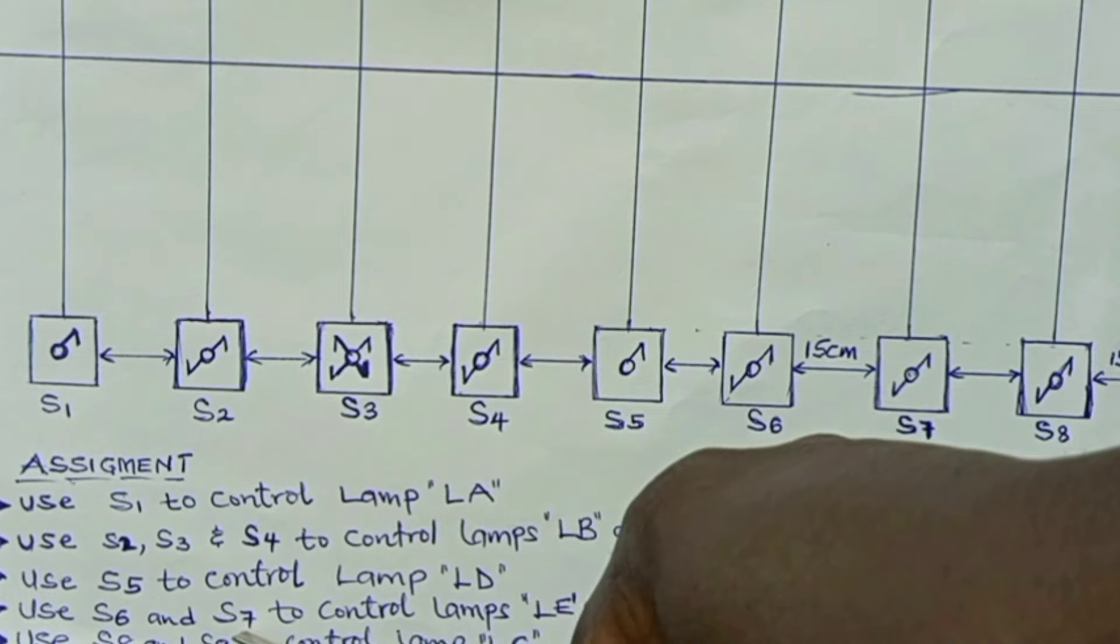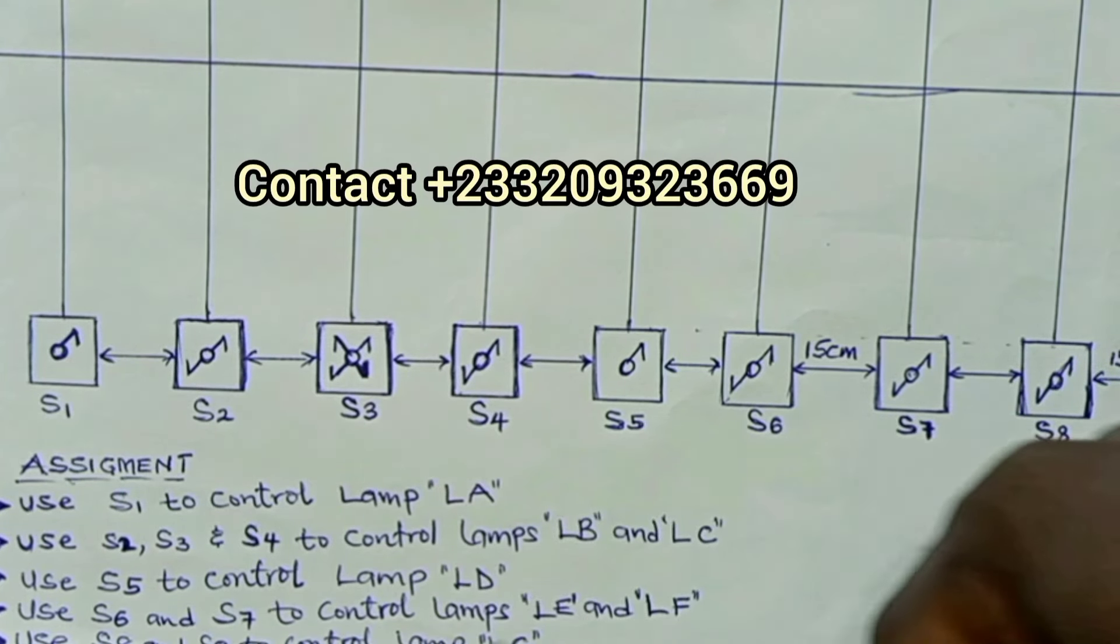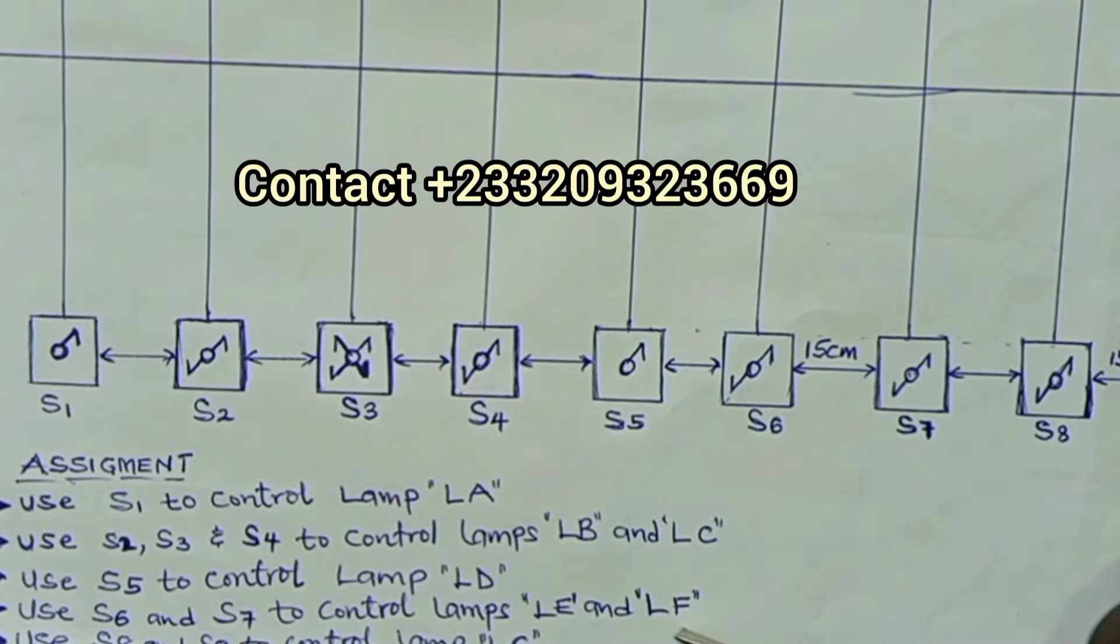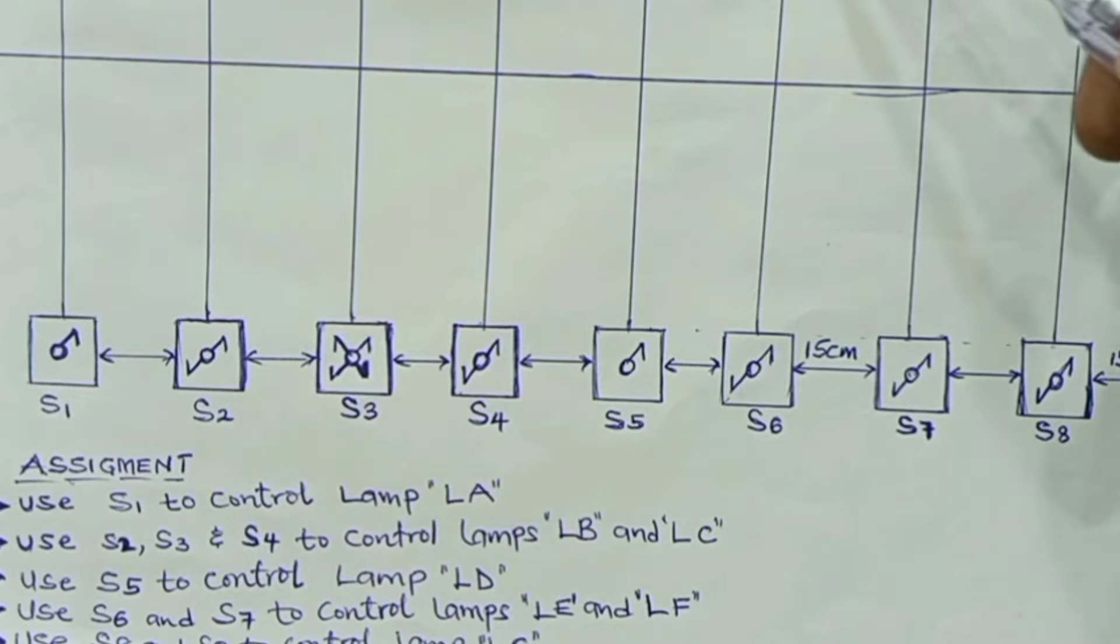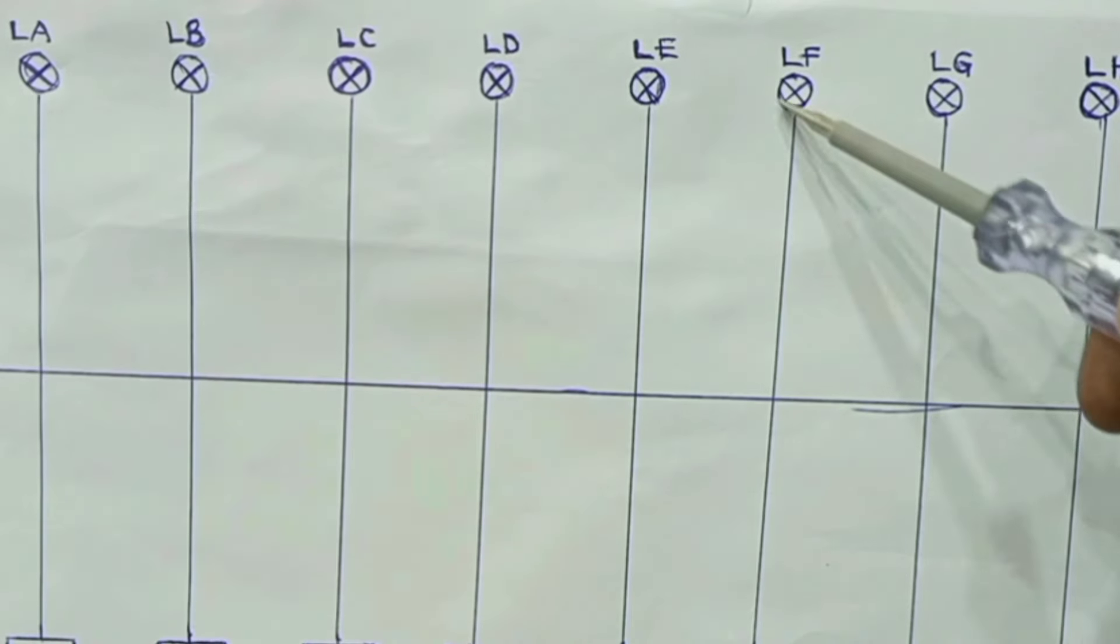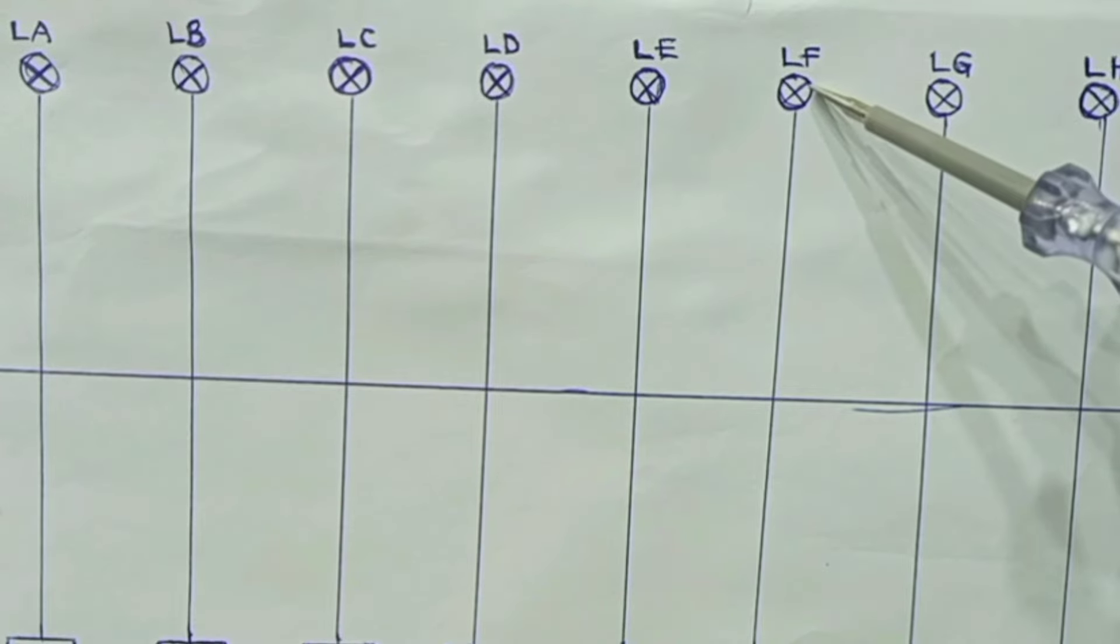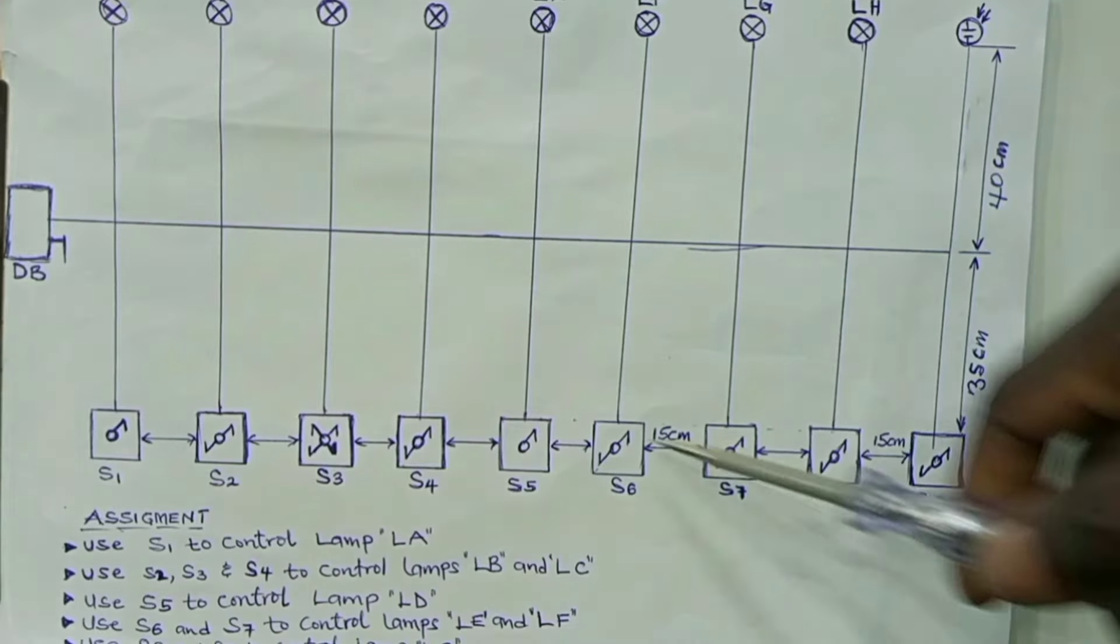Then switch 6, and then switch 7 to control lamps LE and LF. So 6 and 7 are also two-way switches. So you have to wire these two switches to control these two lamps, LE and then LF.